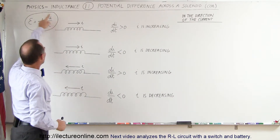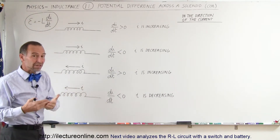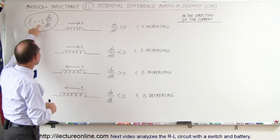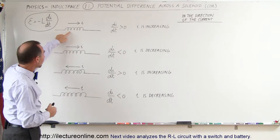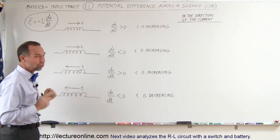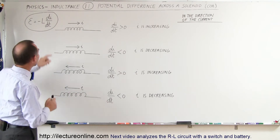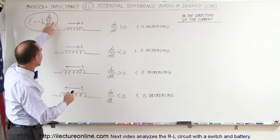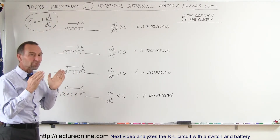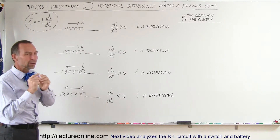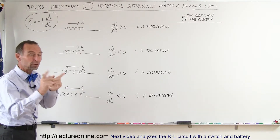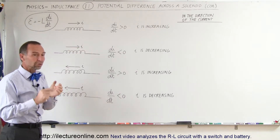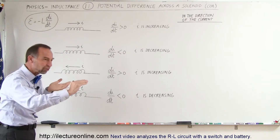Here's the equation that calculates the potential difference. E, the EMF — the voltage across the inductor — is the negative of the self-inductance times the change in the current. So you already have an idea that if the change in the current is positive, greater than zero — if the current is increasing — then the potential difference across the inductor is negative. When we follow it in the direction of the current, if we go from one side to the other side of the inductor following the path in the same direction as current flow,